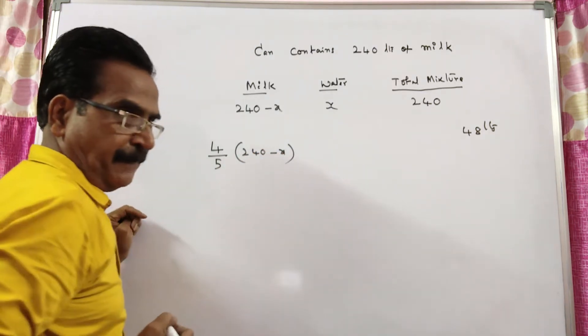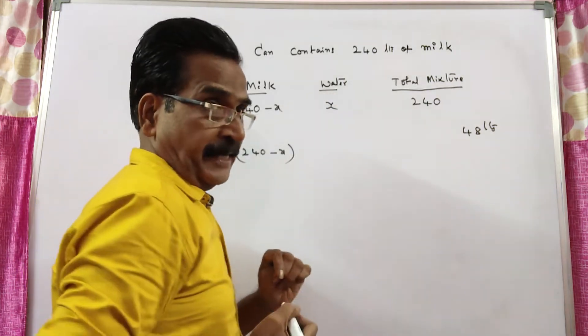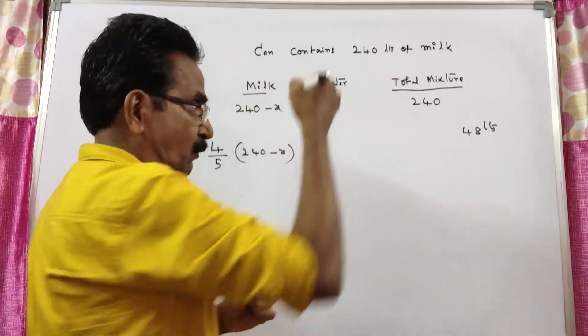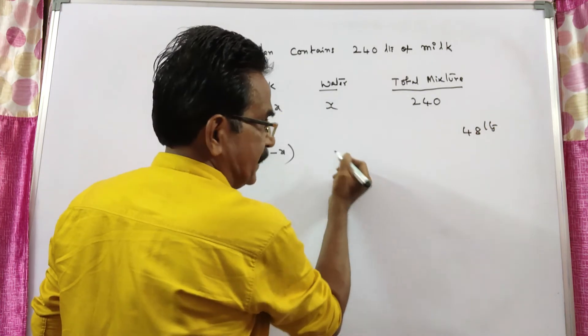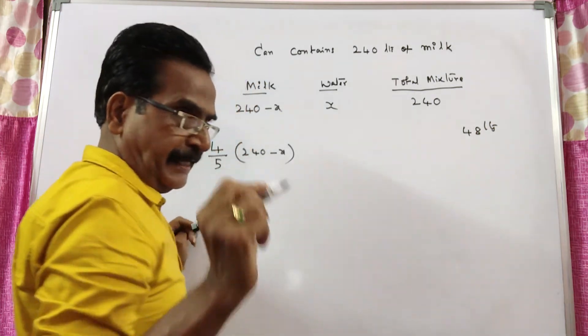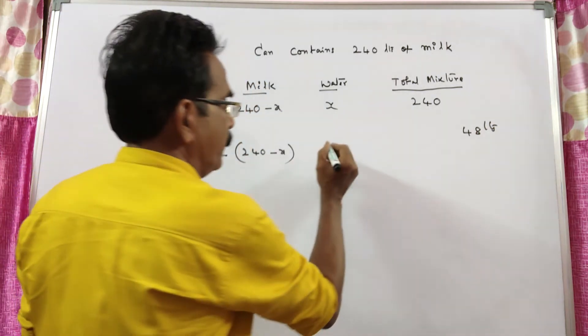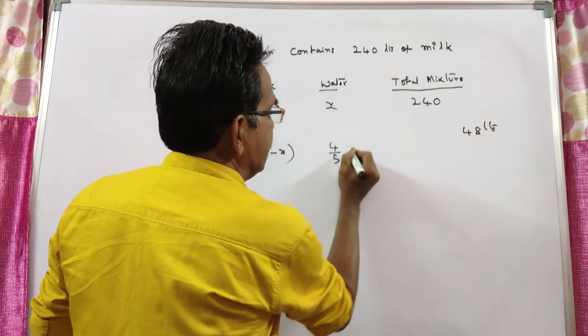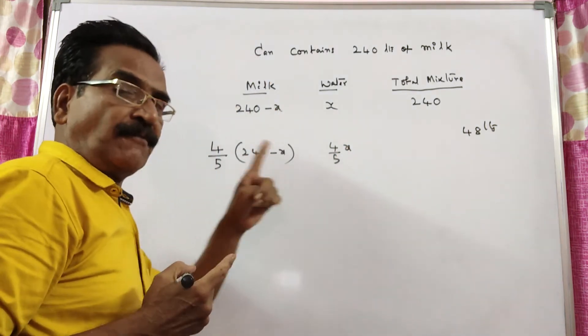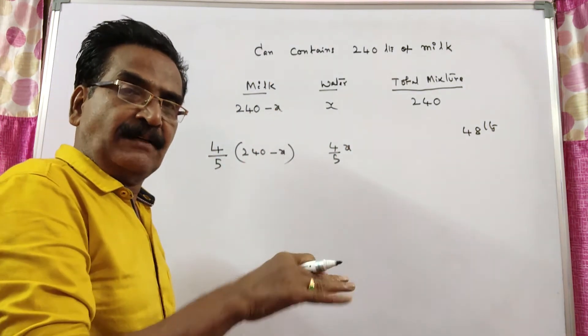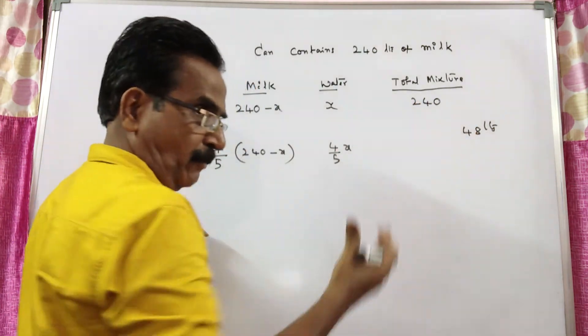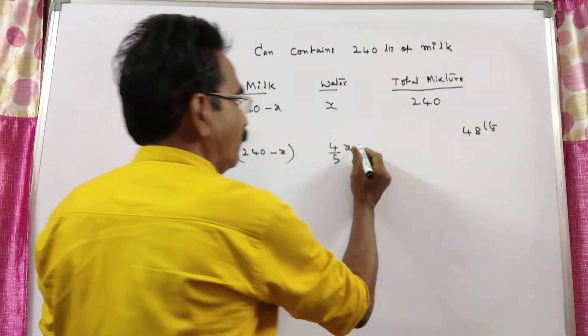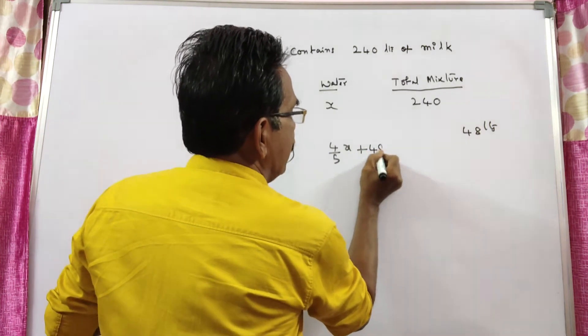This is the remaining milk. What is the remaining water? 20% of water is drawn out, so 80% of the water will be remaining. 80% means 4 by 5. 4 by 5 water is remaining. And now after this, we have added equal quantity of water. That is 48 liters we have drawn out, so 48 liters of water is added.